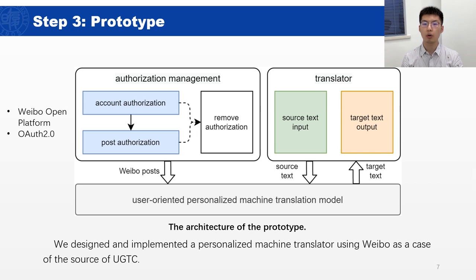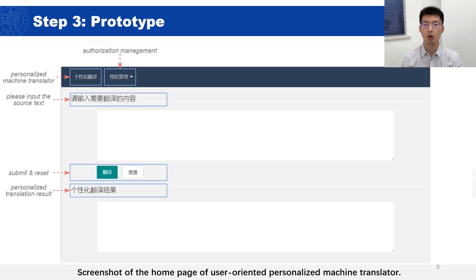After building the model, in step 3, we designed a personalized machine translator prototype. The translator provides a systematic implementation scheme of a user-oriented personalized machine translation system. When a user utilizes the prototype, he or she first binds their Weibo account and authorizes the use of their posts through account and post authorization respectively. Then, by utilizing these posts as a training set, the user-oriented personalized machine translation model is built. After that, the user can input the English text to be translated, and the model will feed it into the E2C transformer and C2C transformer to generate the personalized translation result. The screenshot shows the homepage of our prototype.